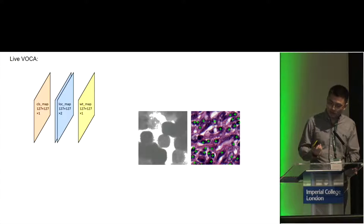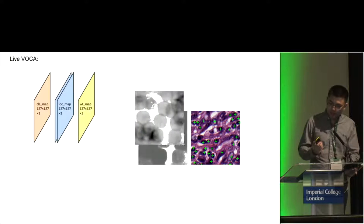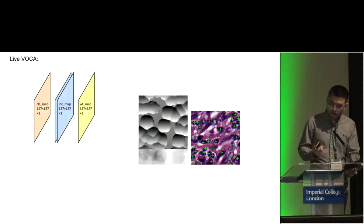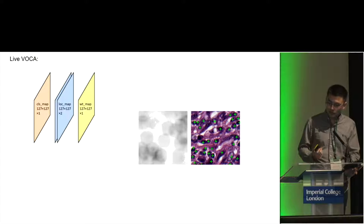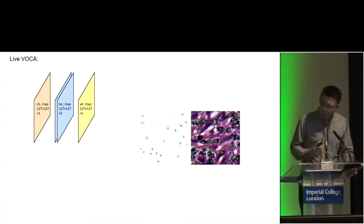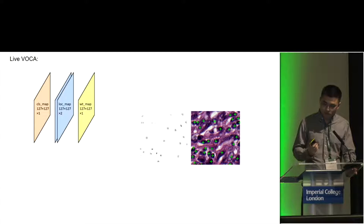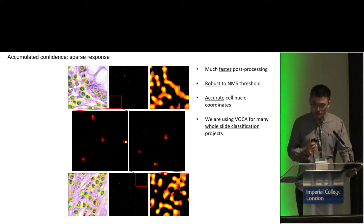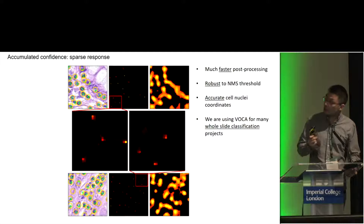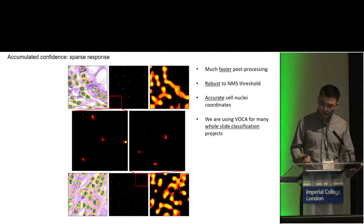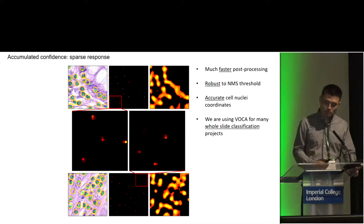This is the confidence map, and we weight it. We then tell the weighted confidence how to move. I generated this video — a GIF based on the trajectory. The result is clear: we get a very sparse response in the end, so the post-processing becomes much faster, and the threshold we choose for non-maximum suppression becomes very robust.